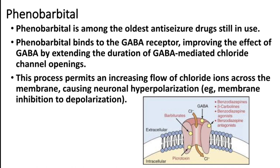When somebody takes a large amount of phenobarbitone tablets, this normally occurs when a patient is already on phenobarbitone and has a large number of tablets available. They can take phenobarbitone either for suicidal tendency or because of depression. They may also have repeated doses because they forget whether they have taken it or not.